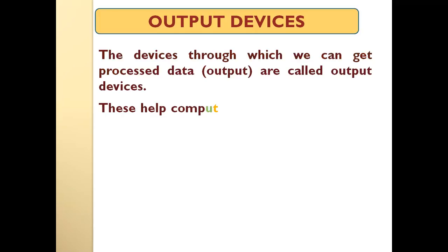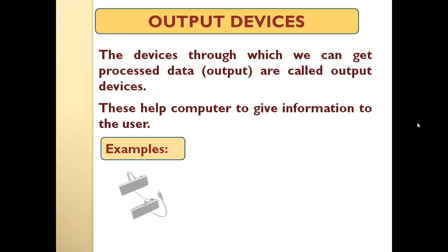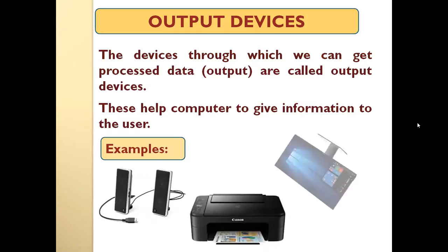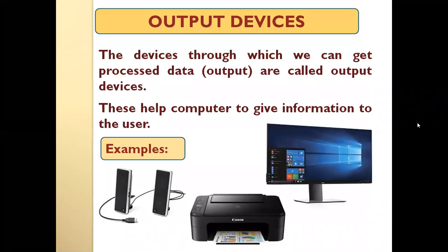The devices from which we can get processed data are called output devices. Remember, we were interacting with a computer using input devices, and now the computer is interacting back to us using output devices. Output devices help the computer give information to the user — for example, speakers, printers, and monitors. These are the three most common output devices we will study today.